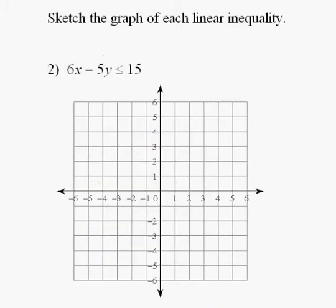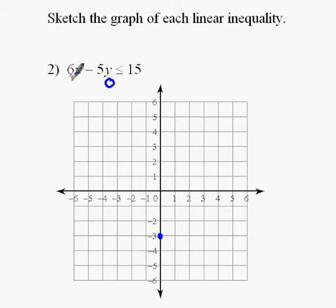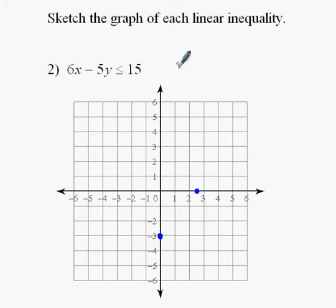Let's do another one. This one is in standard form, so I'll use my handy trick for graphing. If I put 0 in for x, then negative 5y equals 15, so y would have to be negative 3. If I put 0 in for y, positive 6x would have to equal 15, and 15 divided by 6 is 2 and a half, so I'll put a point right there at 2 and a half. So I've got two points. Many people would say, why don't we just solve it for y? And that's fine too.